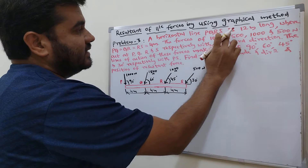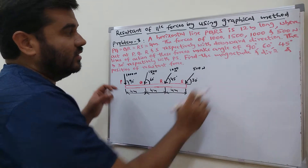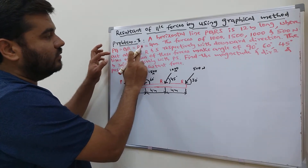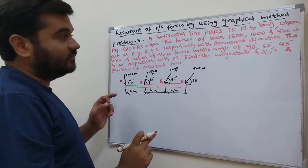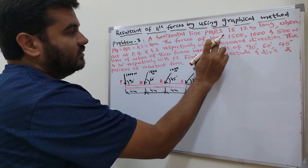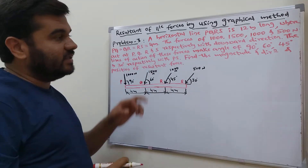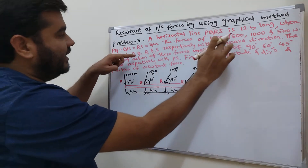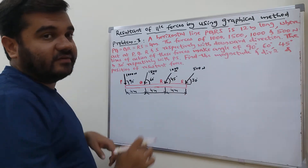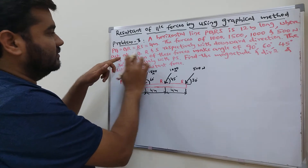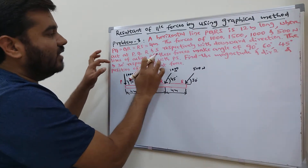A horizontal line PQRS is 12 meters long, where PQ = QR = RS = 4 meters each, totaling 12 meters. The forces of 1000 N, 1500 N, 1000 N, and 500 N act at P, Q, R, and S respectively, in the downward direction.